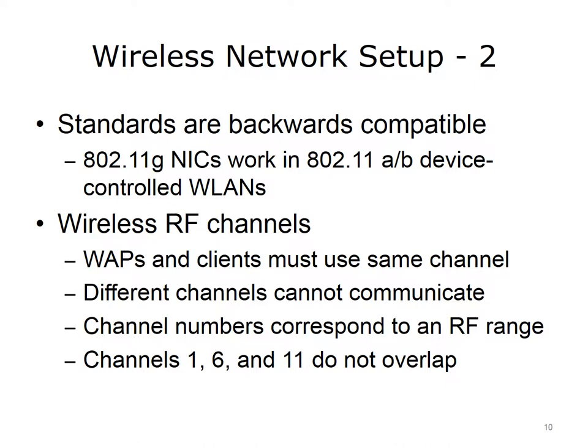For example, channel 5 uses the radio frequency range of 2.421 through 2.443 GHz. Notice that channel 6 uses the radio frequency range of 2.426 through 2.448 GHz, which slightly overlaps the range of channel 5. This overlap can interfere with wireless communication for devices using both frequencies.